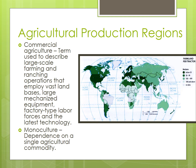That is because the farmers in Canada and the United States and much of the global core are commercial farmers, which is a term used to describe large-scale farming and ranching operations that employ vast land bases, large mechanized equipment, factory-type labor forces, and the latest technology. Commercial farmers have access to lots of capital to invest in machinery, like tractors, cultivators, and milking machines. This is another good indicator of development because these machines are expensive and capital-intensive.